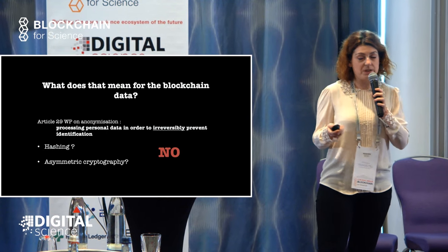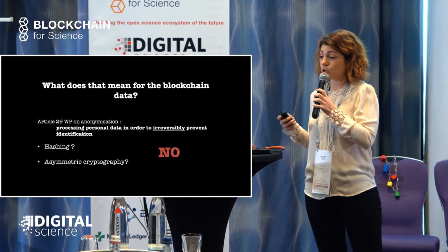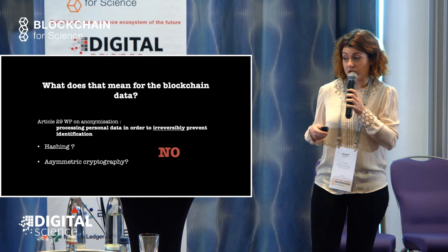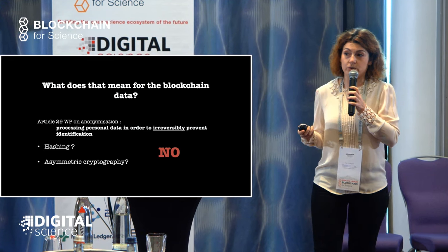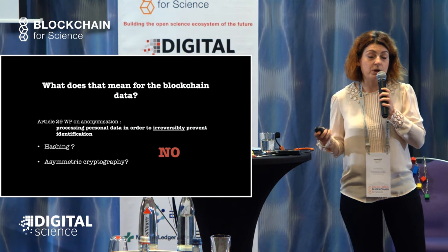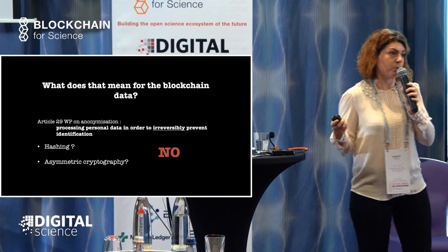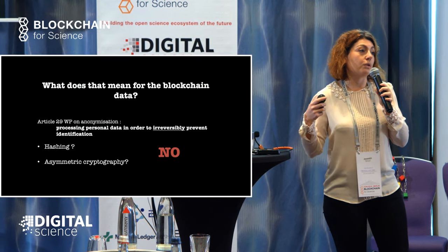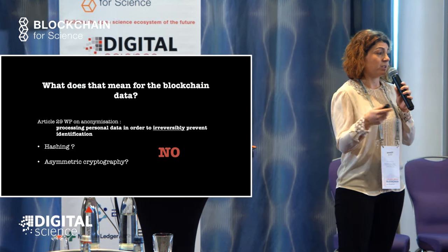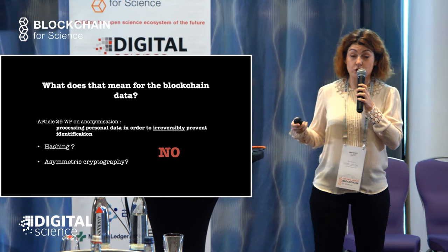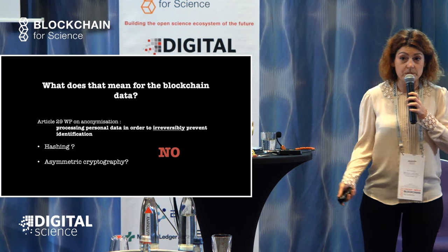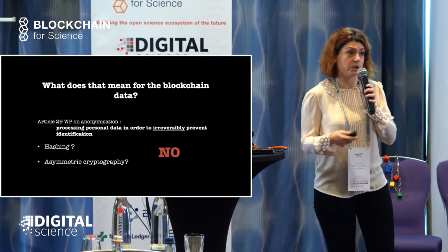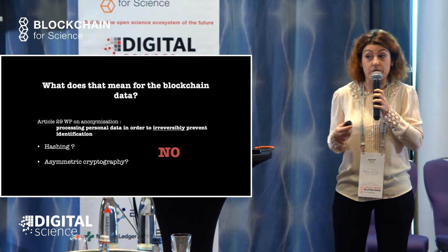The Article 29 Working Party on anonymization has said that processing of personal data should irreversibly prevent identification. By that statement, hashing and asymmetric cryptography — so public keys — cannot fall under the category of anonymization. An analogy would be dynamic IPs: the Court of Justice of the European Union has said that even if the necessary information is held by the internet service provider, that is enough to qualify the dynamic IP as pseudonymous data and not anonymous data. Similarly, hashing and asymmetric cryptography fall under the category of pseudonymous data. This obviously poses a very big problem for all blockchains.